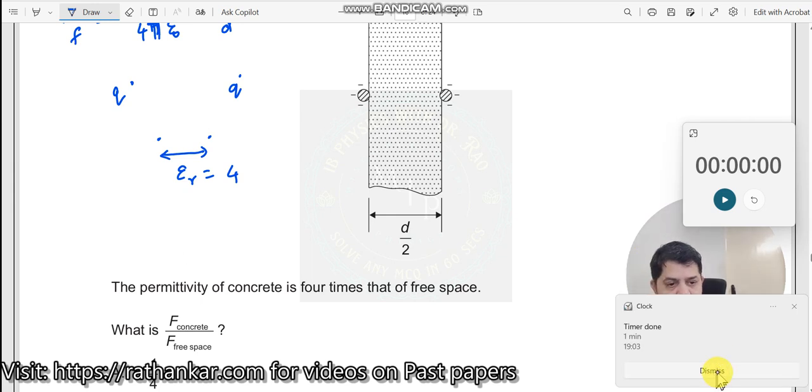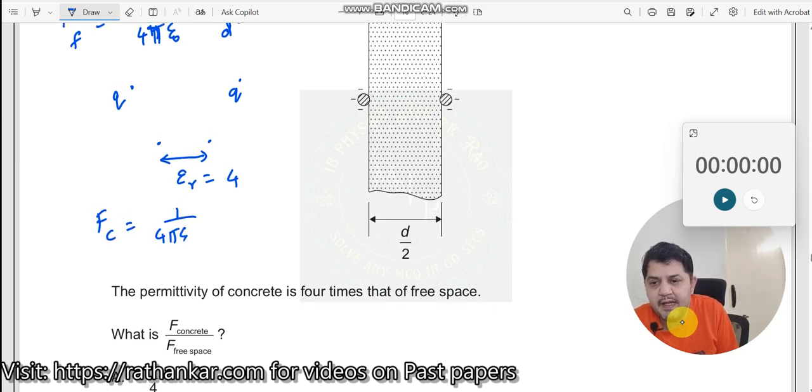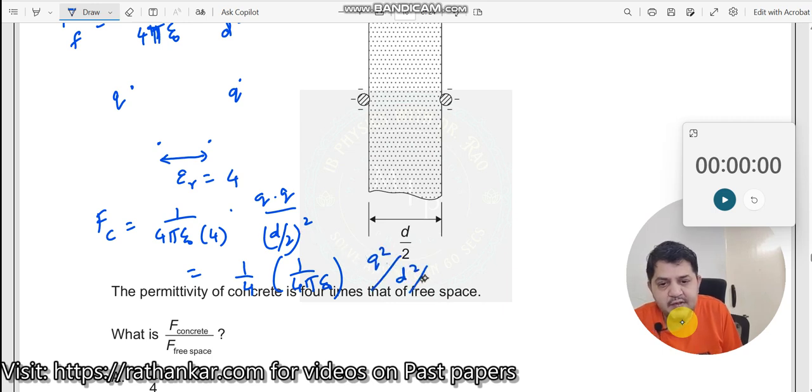Next what we have, we need to find F concrete is equal to 1 by 4 pi epsilon naught into epsilon r into Q into Q divided by d by 2 the whole square. So how much will I get here? I get the answer here as 1 by 4 into 1 by 4 pi epsilon naught into Q square divided by d square divided by 4. This 4 and this 4 goes away.